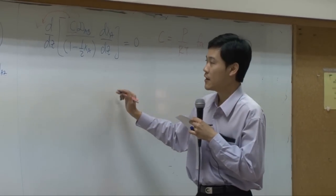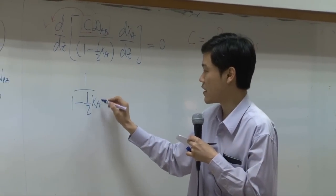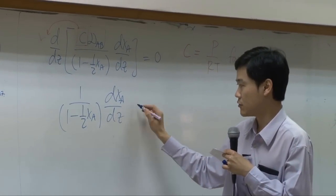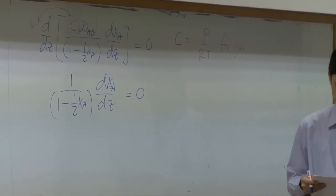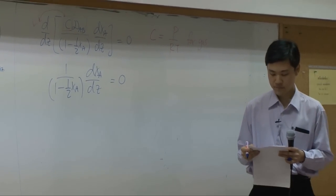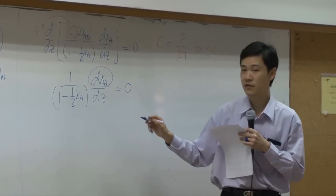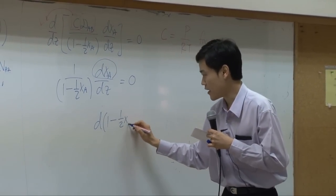From here, I can integrate the equation. So I get 1 minus half X_A, dX_A by dZ equal to 0. And then I can convert this differentiation to d of 1 minus half X_A. Can I?